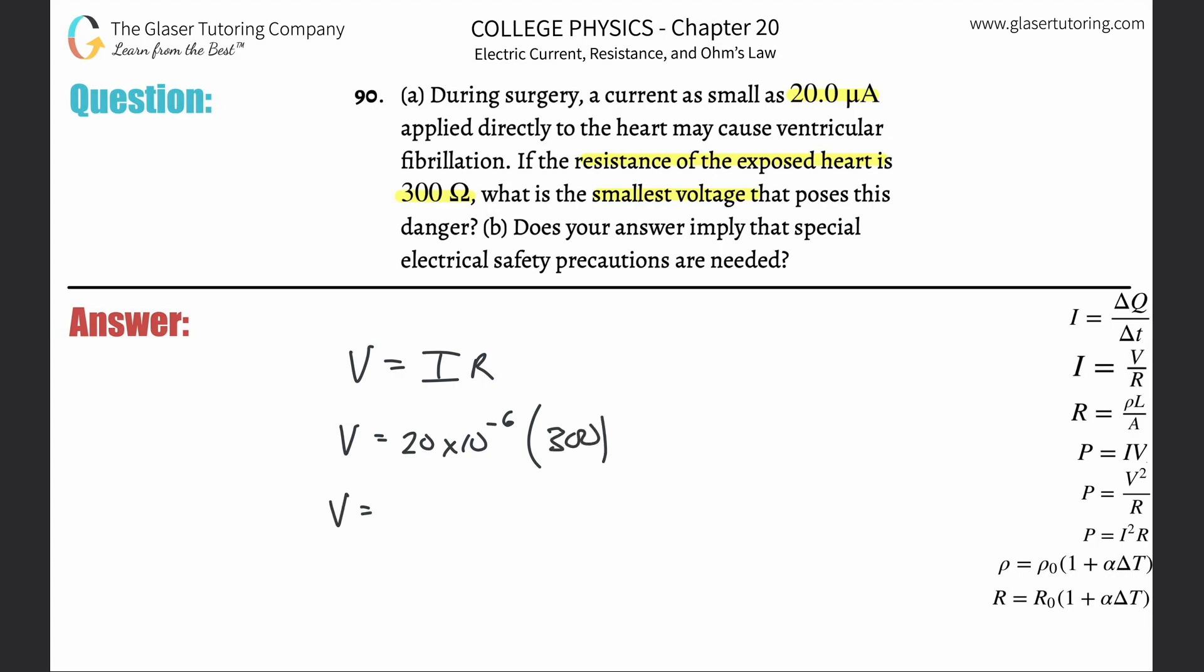So it's just going to be 20 times 10 to the minus six multiplied by then that 300. And we get a value of about 6 times 10 to the minus three volts. All right. So that's the minimum.